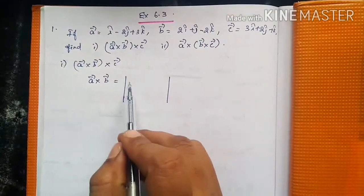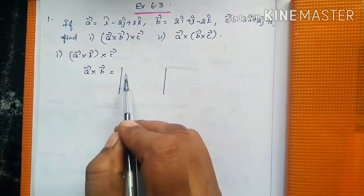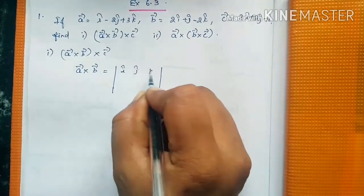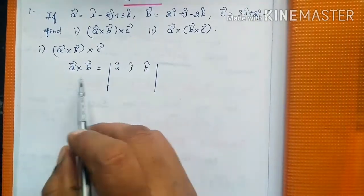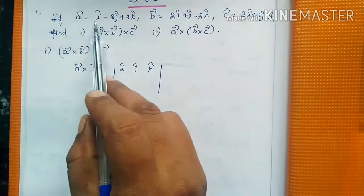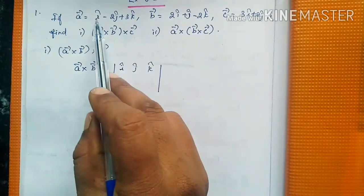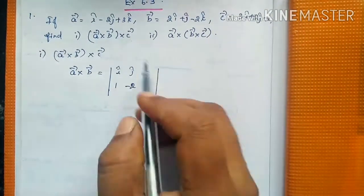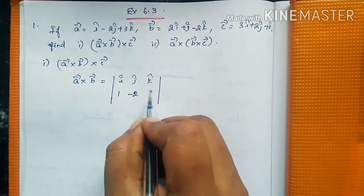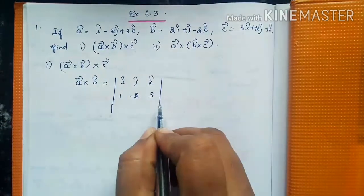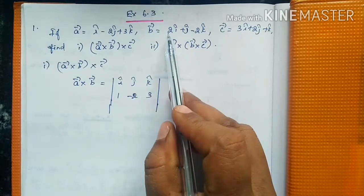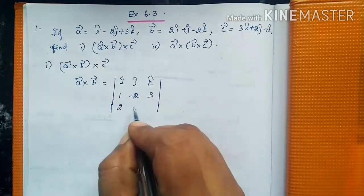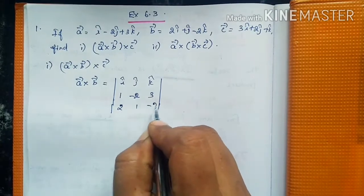In the cross product determinant, the first row we write î, ĵ, k̂. For A vector, the values of I, J, K components are 1, -2, and 3. For B vector, the components are 2, 1, -2.